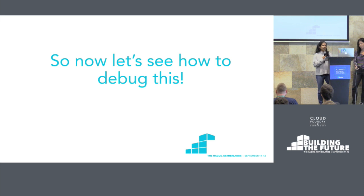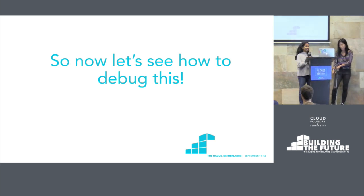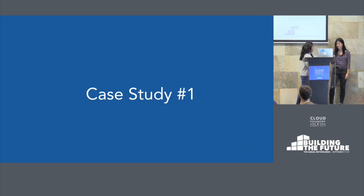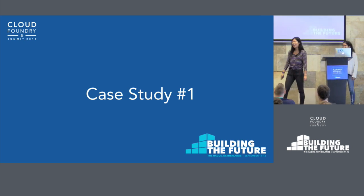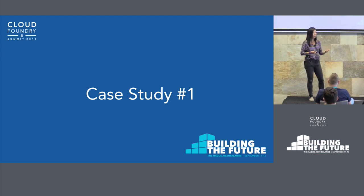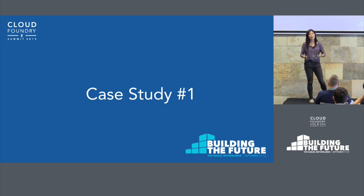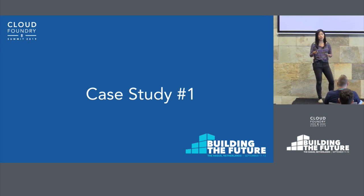Now that you have an overview, we'll talk about problems that people have run into when running Cloud Foundry in production. These are actual problems that we have debugged as members of the networking program, so hopefully we can share our methodology and how we approach debugging. As these are real problems they're definitely super interesting and we didn't do everything perfectly, but hopefully following along the path that we took offers insight into how you might debug in the future.